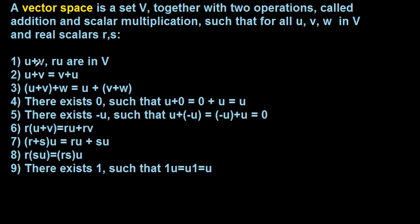The first property is closure under addition and closure under scalar multiplication — in other words, U plus V is in the set V, and R times U also lives in V. We also have commutativity of addition, associativity of addition, a zero vector (additive identity) satisfying the usual properties, additive inverses, distributive properties, associativity for scalar multiplication, and a multiplicative identity of one for scalar multiplication.